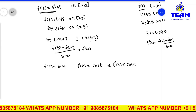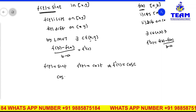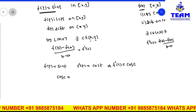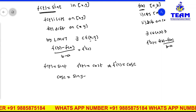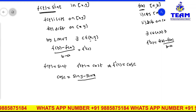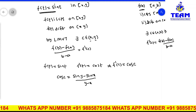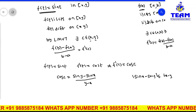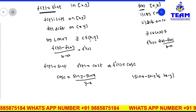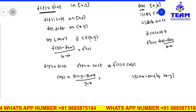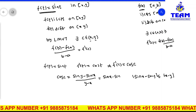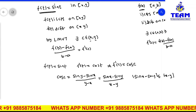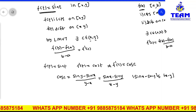Applying Lagrange's mean value theorem, f dash of c is cos c, which is equal to f of b minus f of a divided by b minus a. Since f of t is sin t, we get cos c equals sin y minus sin x divided by y minus x. Taking negative common from numerator and denominator, the negative signs cancel, giving cos c equal to sin x minus sin y divided by x minus y.